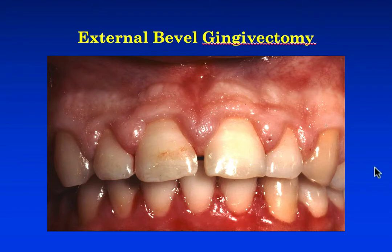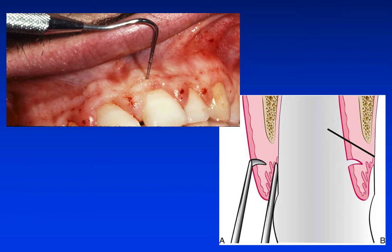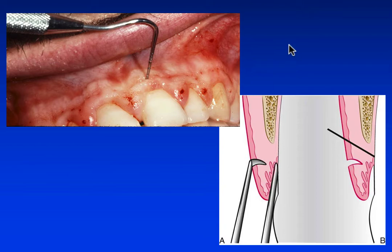As you see here, we have gingiva that is thickened and bulbous at the interproximal areas. The procedure begins by first marking the depth of the periodontal pockets — we need to know this so that we know where to establish our incision line. Next, we take our periodontal probe and create bleeding points by turning our probe 90 degrees to the tooth. Here you can see the establishment of those bleeding points, which serves as our map to properly place our incision.